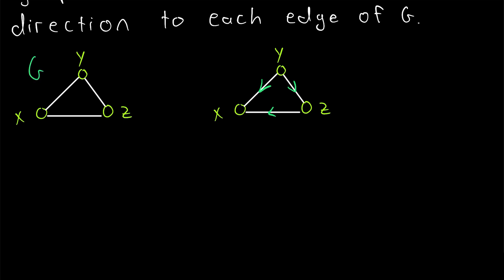So if we call this graph on the left G, then this graph on the right is an orientation of G. And we call it an orientation of G because we have oriented each edge. We've given each edge a direction or orientation to create this directed graph. We could have got a different directed graph if we had oriented the edges differently. So this is just one possible orientation of G.